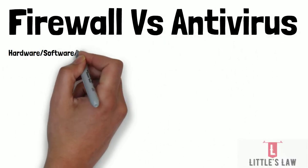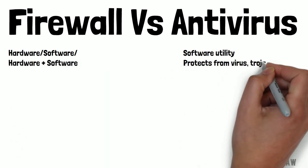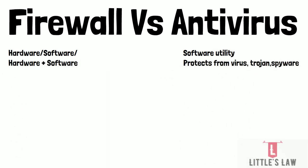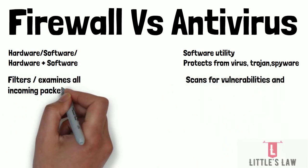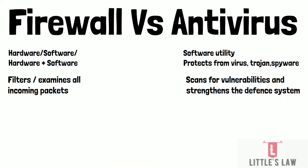A firewall is a security network that can either be hardware, software, or a combination of both, and it is meant to protect computer systems and networks from harmful intrusions. On the other hand, antivirus is a software application that protects the system against internal attacks such as viruses, Trojan horses, and spyware.